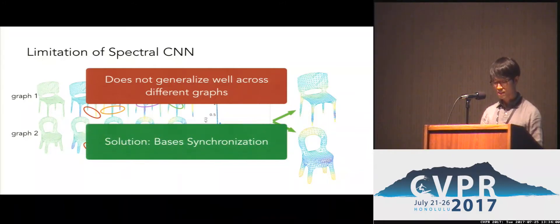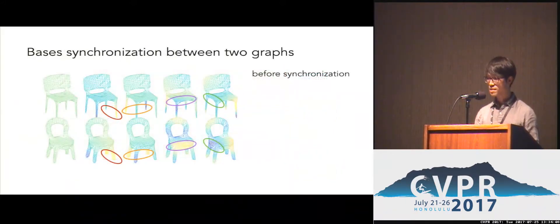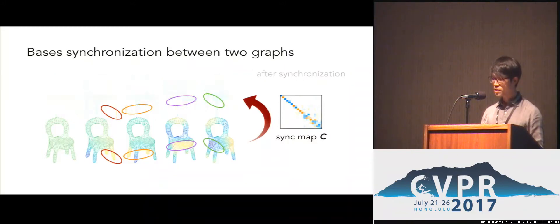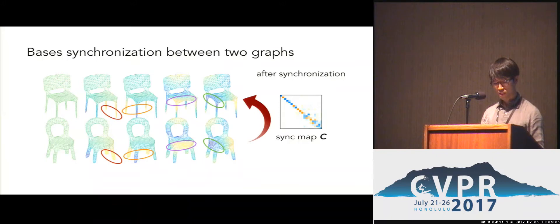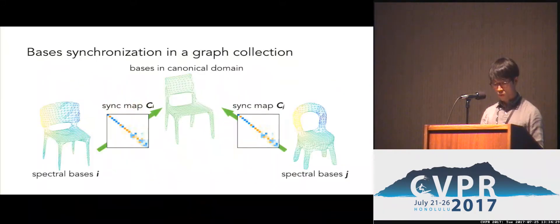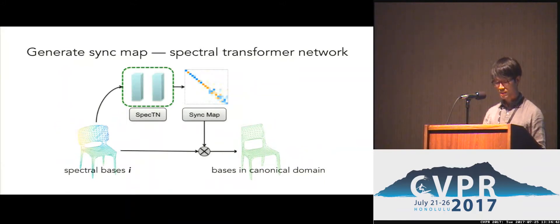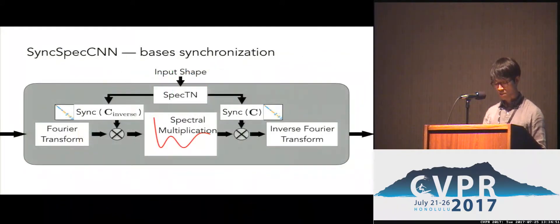To tackle this issue, we propose to use spaces synchronization. The goal is to align bases of different graphs so that spectral filters could generalize. Fourier bases defined for different graphs could look very different. To align bases between a pair of graphs, we could apply a linear transformation to one set of bases, denoted by SyncMap C here. A good SyncMap could align the two sets of bases well. While dealing with a collection of graphs, we choose a canonical domain and use a SyncMap CI for each set of bases I, aligning them with the canonical domain. To generate such SyncMaps, we propose to use a spectral transformer network. The spectral transformer network takes the set of spectral bases as input and outputs the SyncMap needed. The spectral transformer network can be learned together with the spectral filters in an end-to-end fashion.